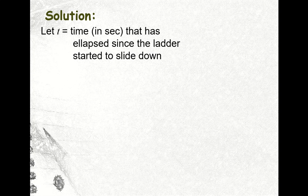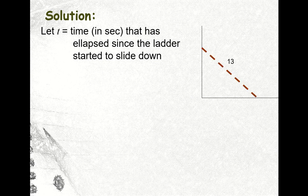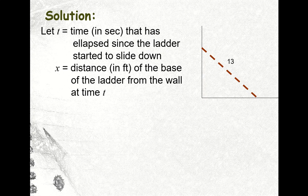Following the procedural strategy in solving related rates problems, we start by letting t be the time in seconds that has elapsed since the ladder started to slide down. Here's the illustration: we have the wall, the ground, and the ladder. The length of the ladder is 13 feet. We let x be the distance in feet of the base of the ladder from the wall at time t — so at any instant t, the distance of the bottom of the ladder to the wall is x.